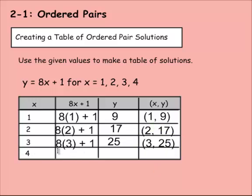4, I think we know the drill by now. 8 times 4 plus 1. 8 times 4 is 32, plus 1 is 33. And then it would be 4 and 33. Notice that this keeps going up by 8. That's because we're multiplying x by 8, so that makes sense that this would work.